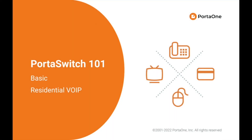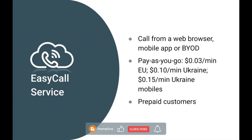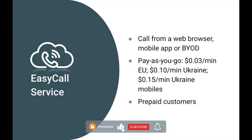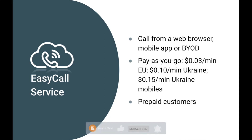Hello everyone and welcome back to our PortoSwitch 101 course. This time we are going to talk about basic residential VoIP scenario. Basic residential VoIP is a replacement for your landline — your old style phone that you have at home. You have the ability to make outgoing calls and receive incoming calls, but instead of using a hardware phone you can use a web browser, a mobile application, or a personal IP phone. We are going to walk you through all the configuration steps for this scenario using our practical example.